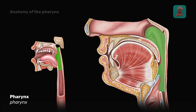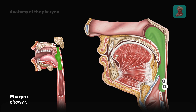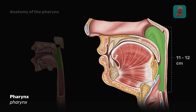In this video, we are going to examine the anatomy of the pharynx. This is an unpaired organ carrying food from the oral cavity into the esophagus, as well as air from the nasal cavity into the larynx. It is a funnel-shaped muscular canal with a length of 11 to 12 centimeters.